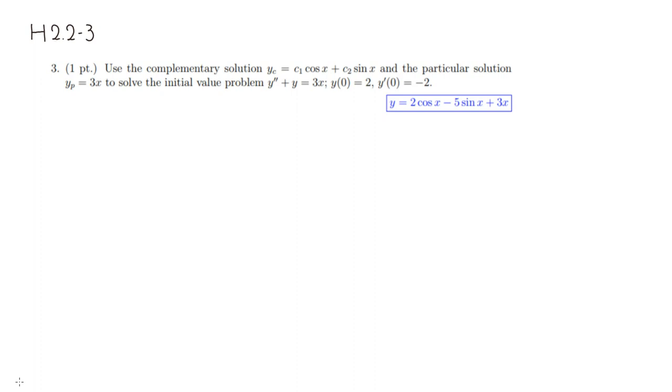Let's look at homework 2.2, 2.3, problem number 3. We're going to use the complementary solution, which is just a solution of the homogeneous equation. So you set the right-hand side equal to 0, then you solve and you get the complementary solution. And the particular solution is a solution that satisfies this differential equation. But we want to find the solution of the initial value problem.